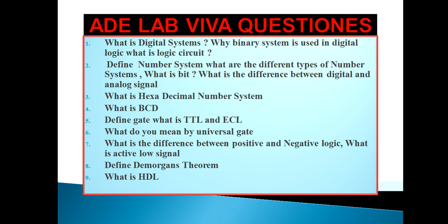What is the difference between positive logic and negative logic? Positive logic is a system which uses 5V to represent logical 1 and 0V to represent logical 0. Negative logic is the system which uses 0V to represent logical 1 and 5V to represent logical 0.